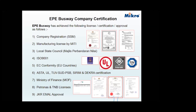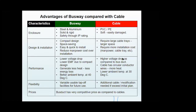We are registered under MOF, and we have PETRONAS and TNB licenses as well as JKR email approval. Here are some general knowledge points — a comparison table showing the advantages of busway compared with cables. Busway is the alternative solution for conventional cables. The biggest difference is in terms of the enclosure: busway is made of solid, rigid material like steel and aluminum, compared with cables which are normally made of PVC or PE — a soft material that can be damaged easily. Busway also has IP ratings.